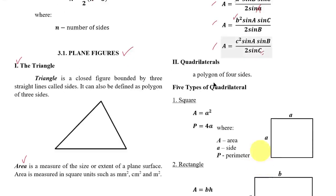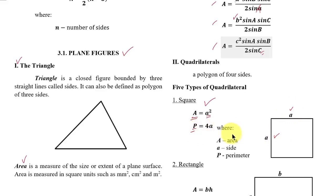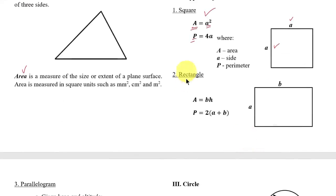Next polygon: the quadrilateral, a polygon of four sides. The first quadrilateral is the square. The formula to solve the area of a square is: Area = a² (side squared), and the perimeter is: P = 4a. Number two: rectangle. The area is base times height — Area = a × b — and you can also write it as A = b × h.